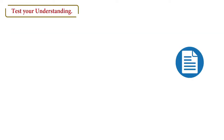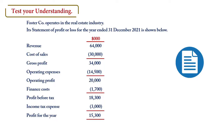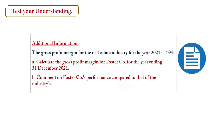Let's test our understanding again. Foster Co operates in the real estate industry. Its statement of profit or loss for the year ended 31 December 2021 shows revenue, cost of sales, gross profit of 34,000, operating expenses, operating profit of 20,000, finance cost, profit before tax of 18,300, income tax expense, and profit for the year of 15,300. Additional information: the gross profit margin for the real estate industry for 2021 is 45%. We are to calculate the gross profit margin for Foster Co for 2021 and comment on its performance compared to the industry.